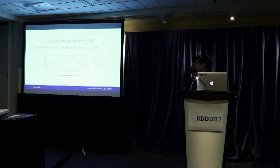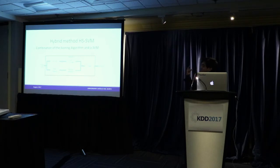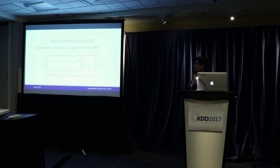For the hybrid method, we combine the scoring algorithm's result — a real number — with a Support Vector Machine. The text data goes through two pipelines: first, a classical TF-IDF representation fed into Latent Semantic Analysis, generating a document vector. On the other hand, we apply part-of-speech tagging and feed it to the scoring algorithm to get a real number. We then combine these two into a new vector and train a Support Vector Machine, which generates the results.